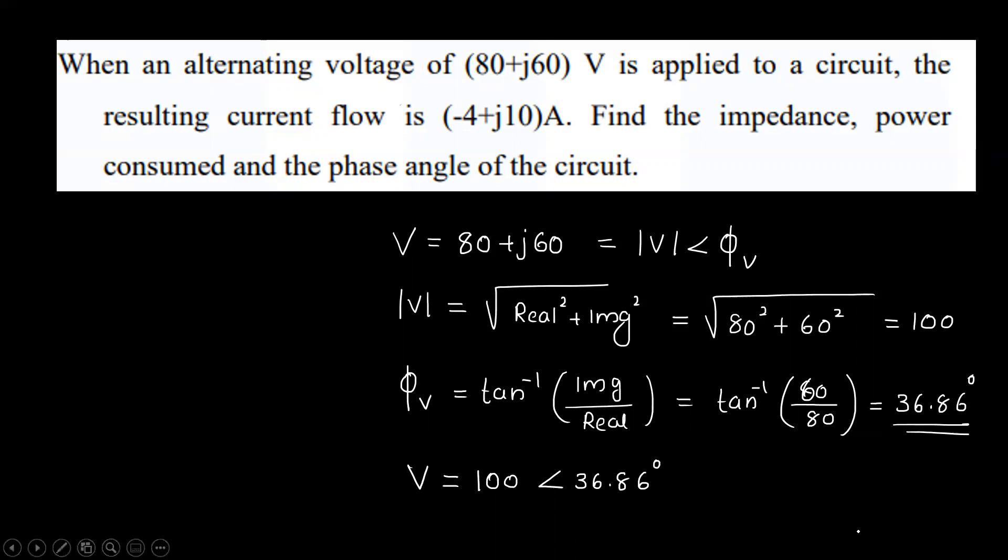The current i is equal to minus 4 plus j10. The magnitude will be equal to root of minus 4 squared plus 10 squared. That equals 10.77.